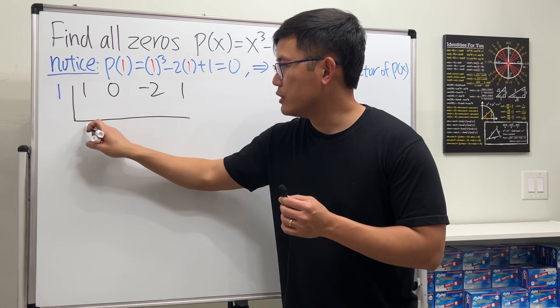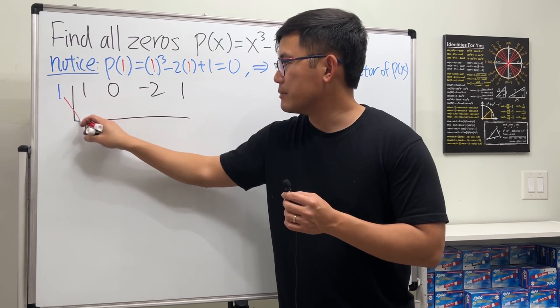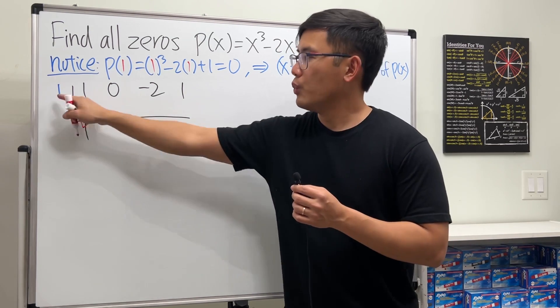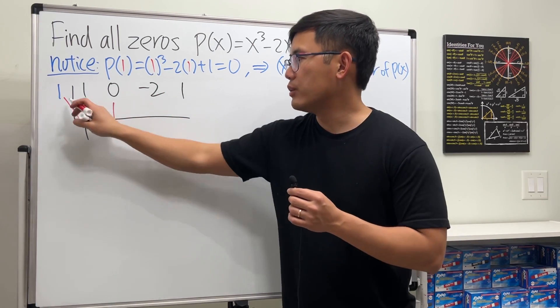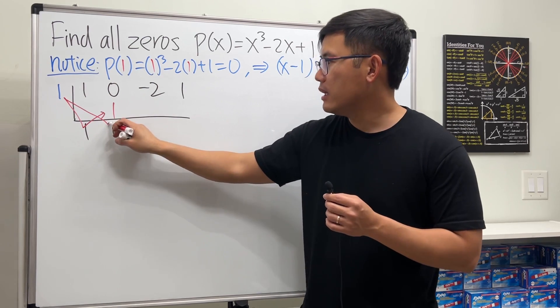Bring down this number which is one, and we take this times that and we put it here. One times one is one, and we add: zero plus one is one. Continue: one times one is one and we put it here.